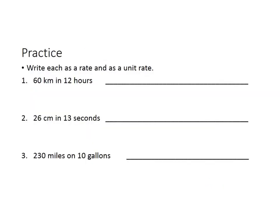Let's practice this. We're going to write each of these as a rate and as a unit rate. So in the first case, 60 kilometers in 12 hours. As a rate, we could write that as 60 kilometers per every 12 hours.